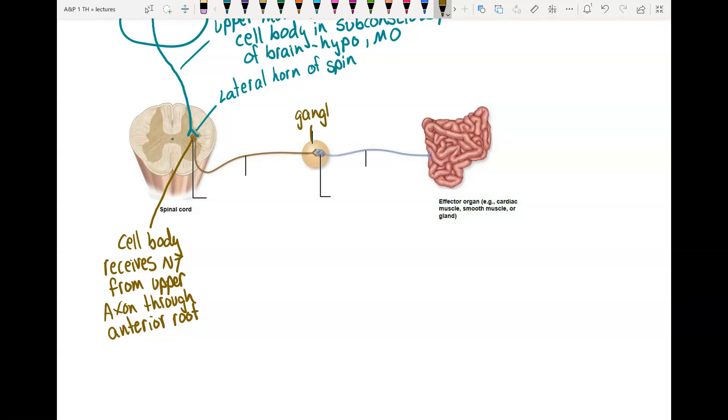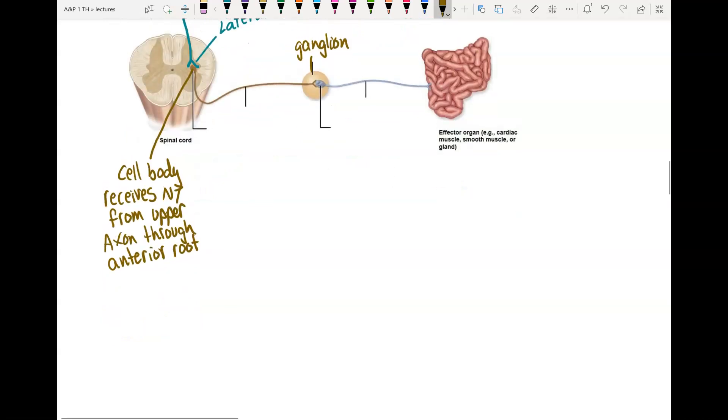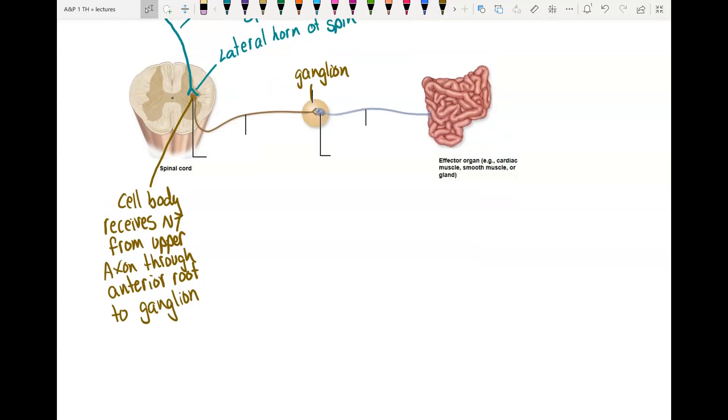And to a ganglion. So here we have a ganglion. So this does have a cell body out in the PNS. Then we have a second lower motor neuron. This one has its cell body in the ganglion, where it receives neurotransmitter from the previous one.